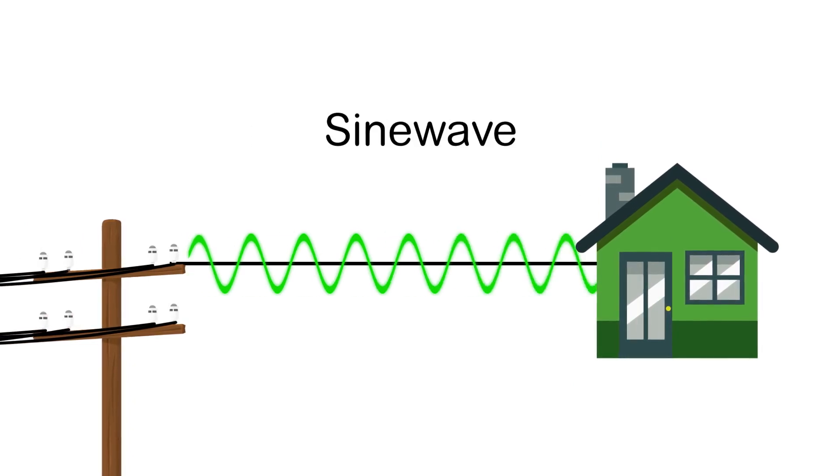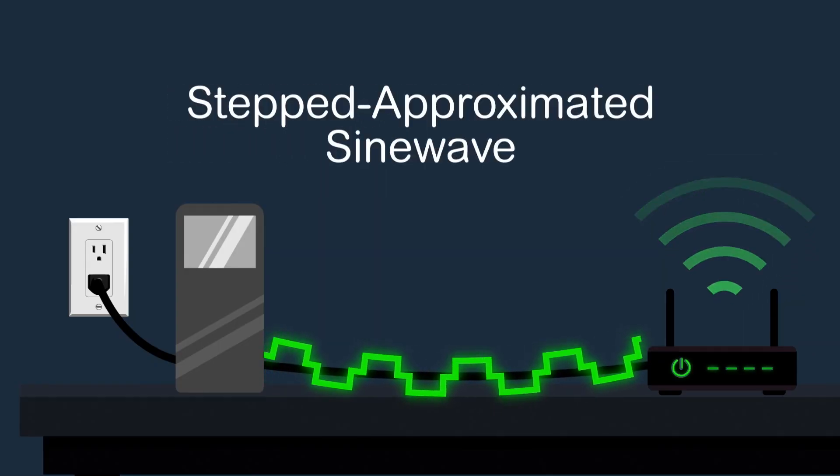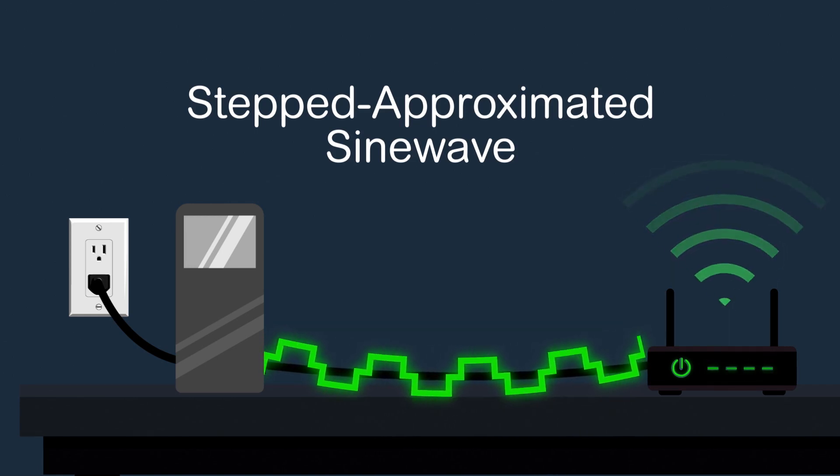Normally the current coming into your house goes up and down in a smooth sine wave. Most basic battery backups generate a rougher version of that current called a stepped approximated sine wave because it looks like a step.